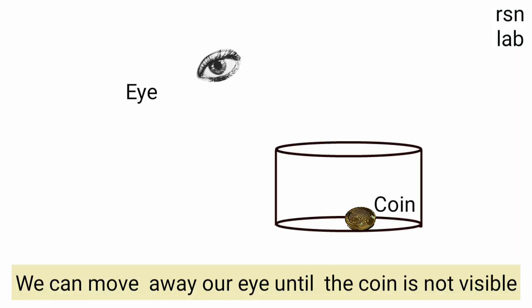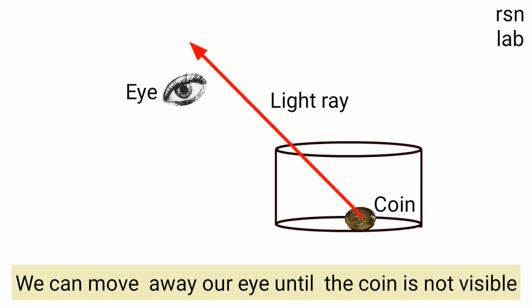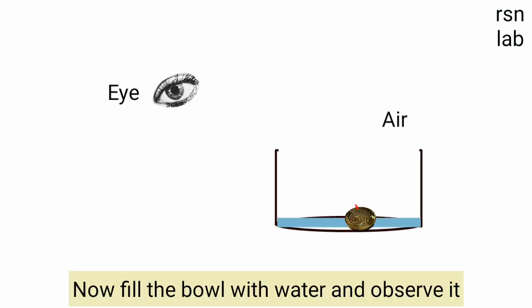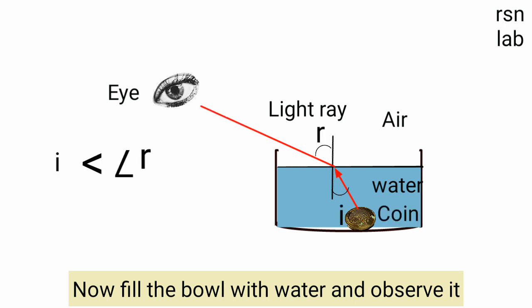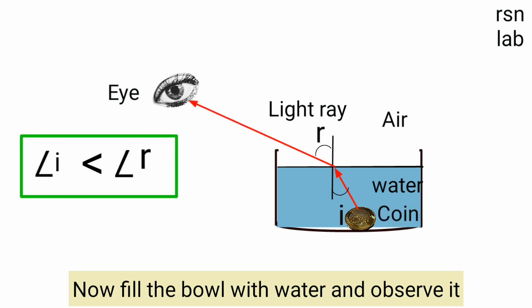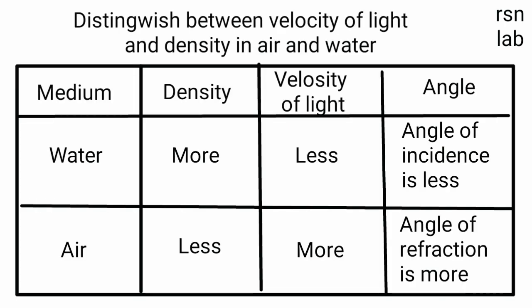We can move our eye away until the coin is not visible. Now fill the bowl with water and observe it. Distinguish between velocity of light and density in air and water: density is more in water, less in air; velocity of light is less in water, more in air. Angle of incidence is less in water; angle of refraction is more in air.